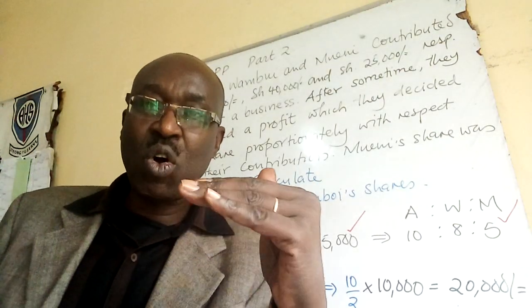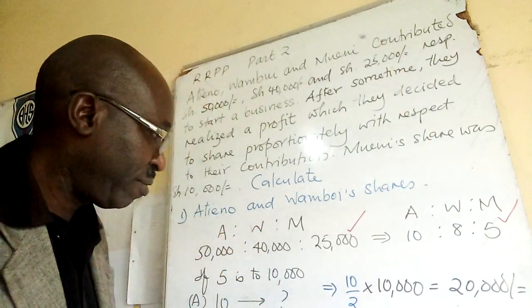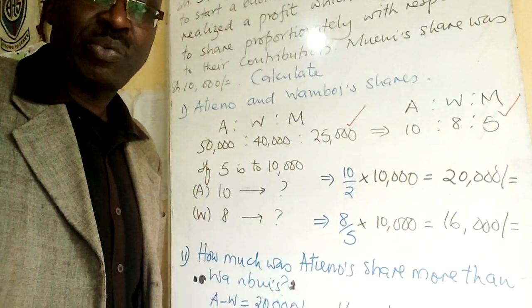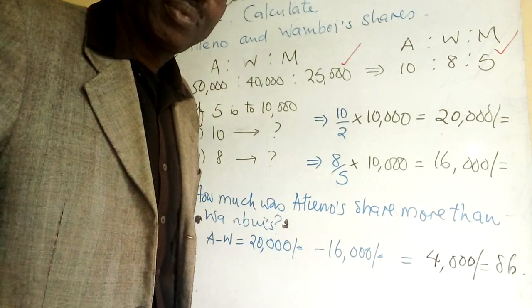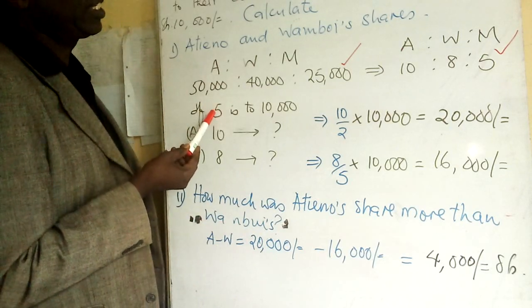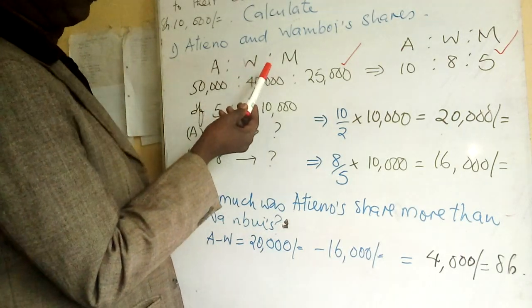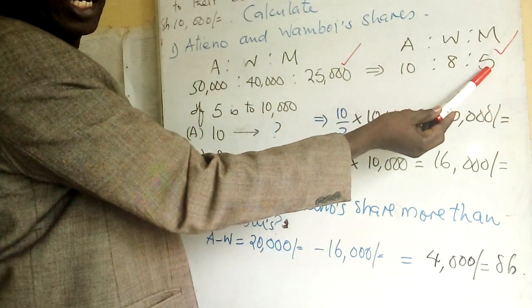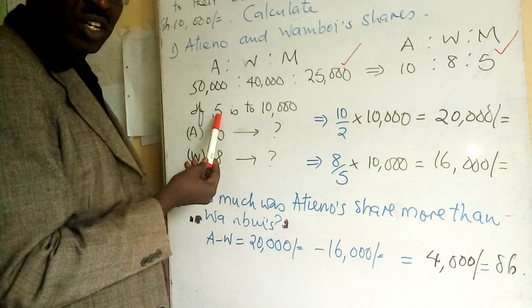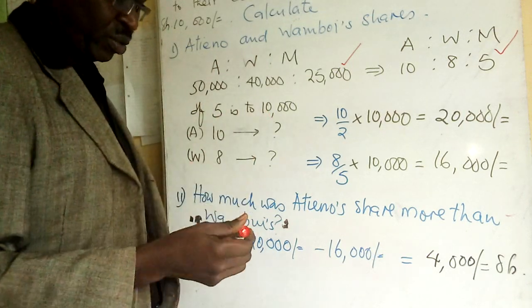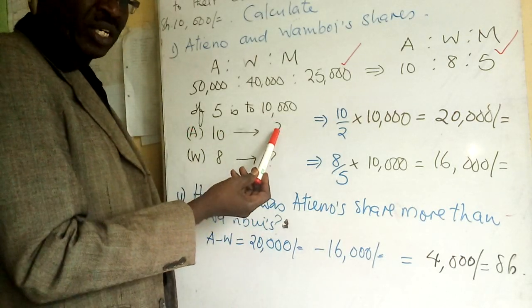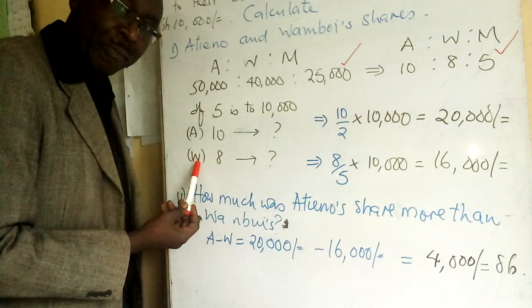We have gotten their smallest possible numbers. Now I want us to focus here. We are given that Mueni has five parts, and for those five parts he gets ten thousand.